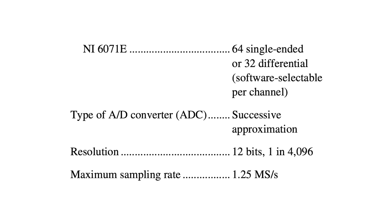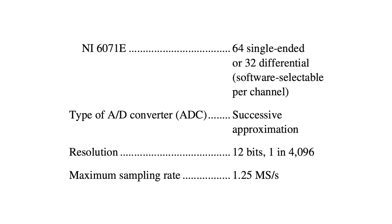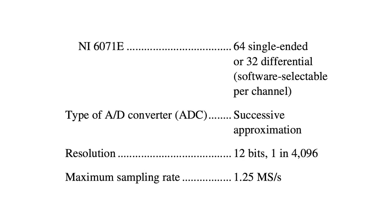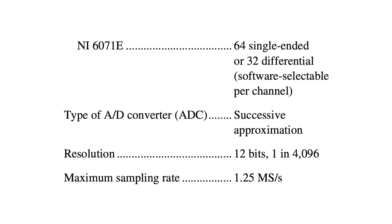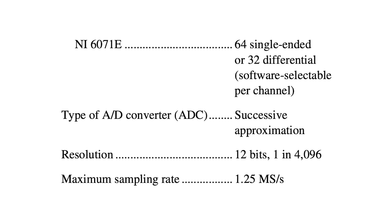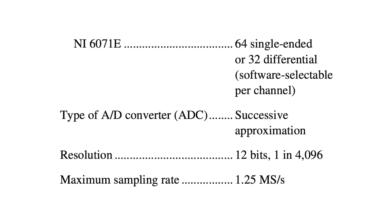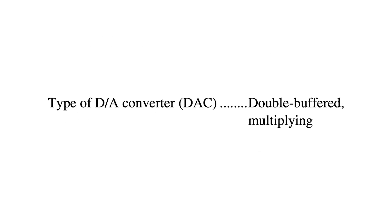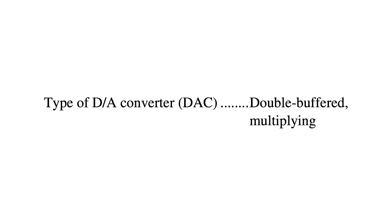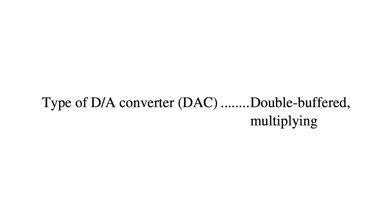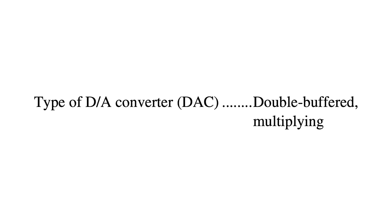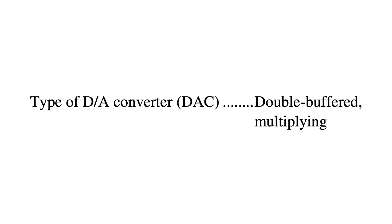For analog output, the PCI-6071E includes two voltage channels with 12-bit resolution and a maximum update rate of 1 MS per second per channel. Its double-buffered, multiplying DAC design ensures precise and stable voltage outputs, ideal for control and testing environments.